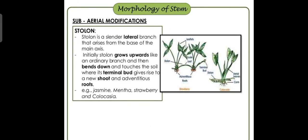Next, what are stolons? A stolon is a slender lateral branch that arises from the base of the main axis. Stolons are basically lateral branches that arise from the base of the main axis. The distance between the adventitious roots within this structure is what we call the stolon.